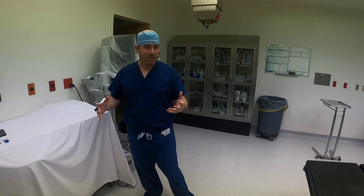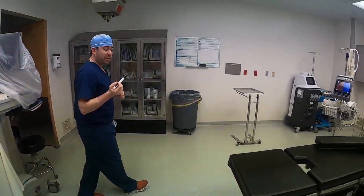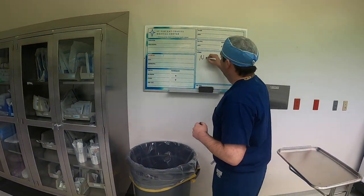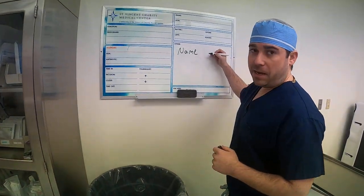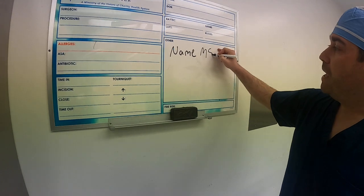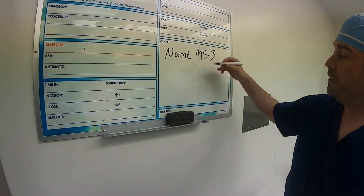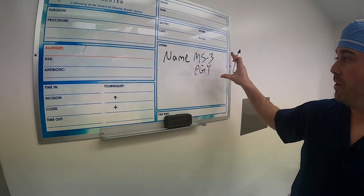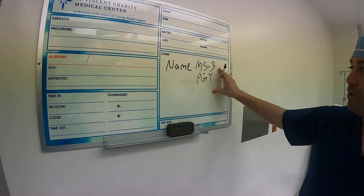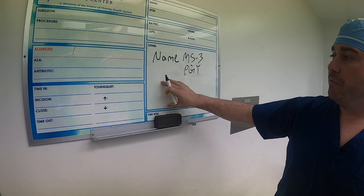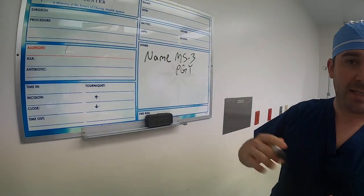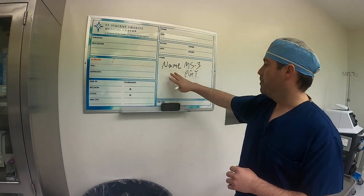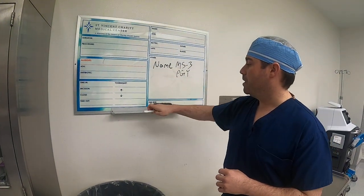The first thing you want to do is come over to the board and write your name — first and last. If you're a student, write MS and then your year (third or fourth). If you're a resident, write PGY. Make sure everyone in the OR knows who you are before you get scrubbed in, because the last thing you want is to spell your name to the nurse while the case is going on.